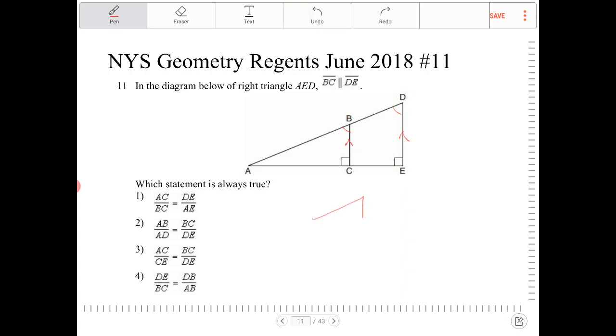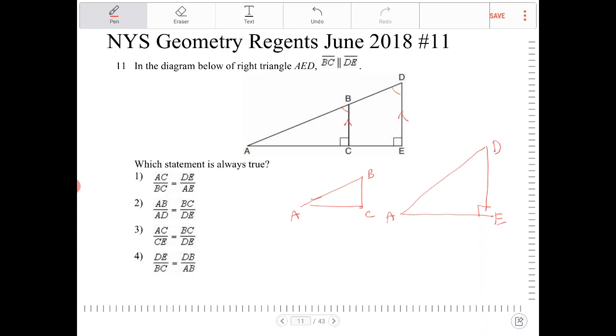We have a smaller triangle, ABC, with the larger triangle, ADE, that are similar. So the corresponding sides are going to be all proportional. Let's see which options here are going to satisfy that proportion.